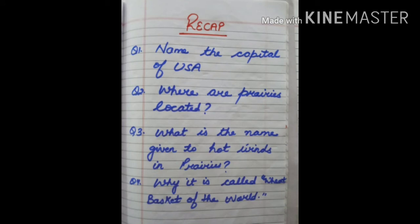Let us recall what we read. The capital of USA is Washington D.C., where D.C. means District of Columbia. Prairies are located in the Northern Hemisphere between the equator and the North Pole. The hot wind that blows in prairies is called Chinook — spelled C-H-I-N-O-O-K. Prairies are called the wheat basket of the world because they export surplus wheat to other countries.